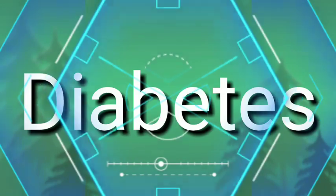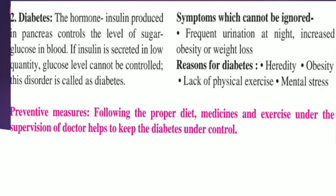Let us see what diabetes is. The hormone insulin, produced in the pancreas, controls the level of sugar — glucose — in the blood. If insulin is secreted in low quantity, the glucose level cannot be controlled; this disorder is called diabetes. Symptoms include frequent urination at night, increased obesity, or weight loss. Reasons include heredity, obesity, lack of physical exercise, and mental stress.